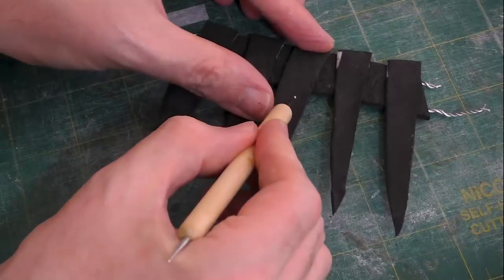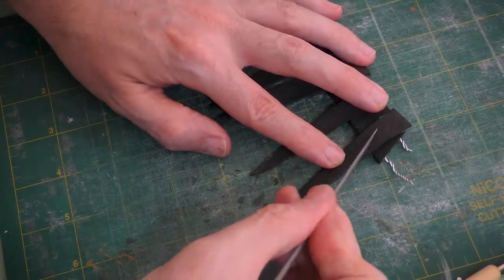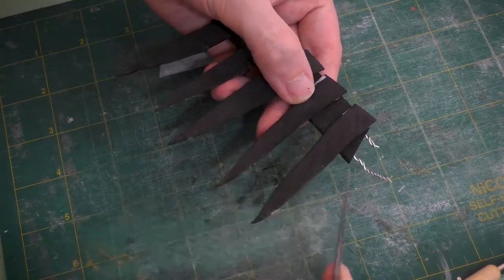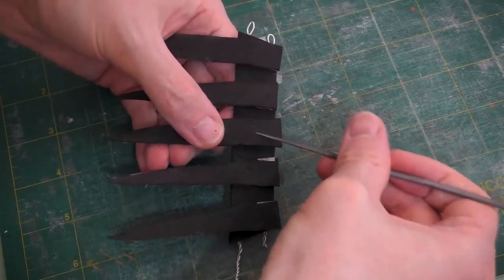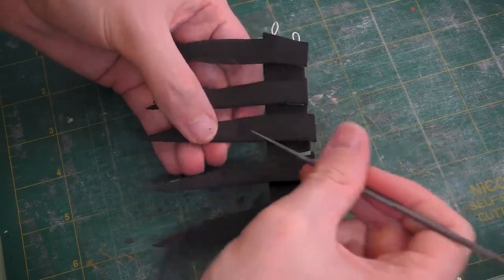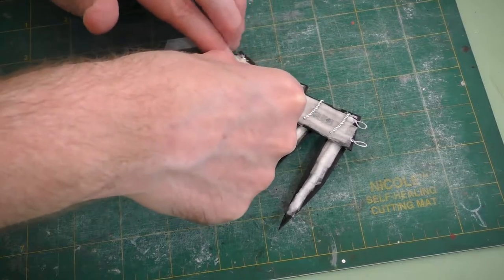We'll go ahead and add some texturing to each of the blades, scratches and dents and gouges. Then we'll go ahead and paper tape the blade wires to the main form.